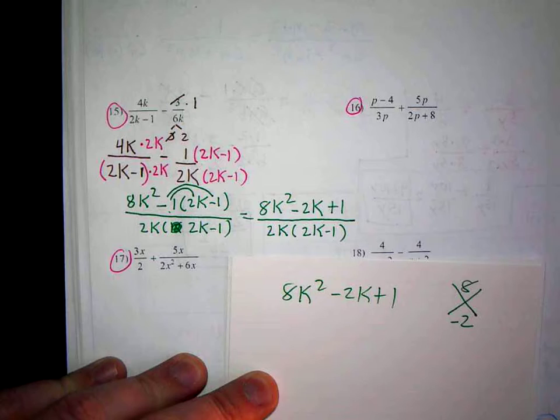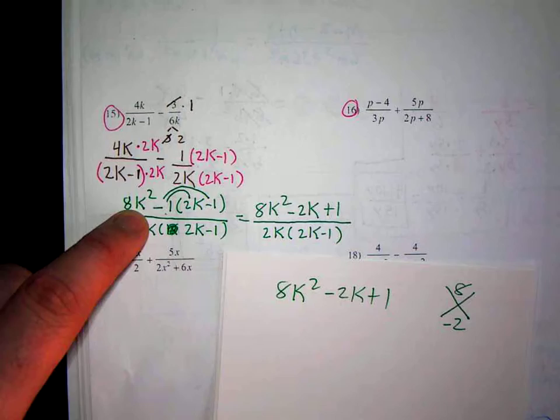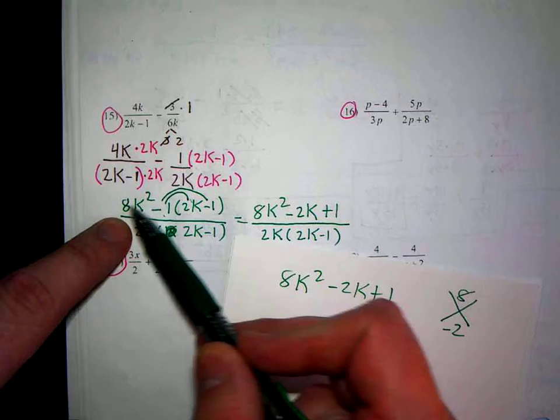Why do I take the 2k-1 out of both? Why do I take it out of both? Here? So why not just cross those off? Because these are together through subtraction. So you can't just cross those off.